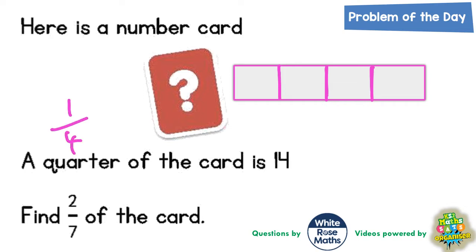One quarter is 14. So one piece on the bar must be worth 14. But of course that means all the quarters are the same size. So all the quarters must be worth 14 as well.